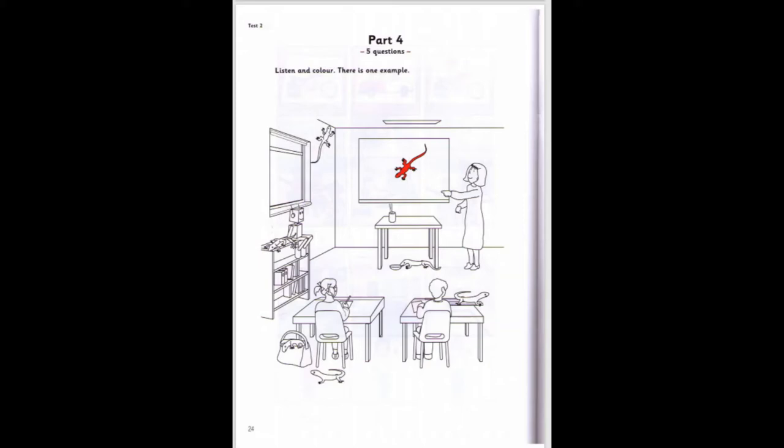Two. Now, find the robot. Right. There's a lizard next to it. Can you colour it green? Sorry? Colour the lizard next to the robot green.